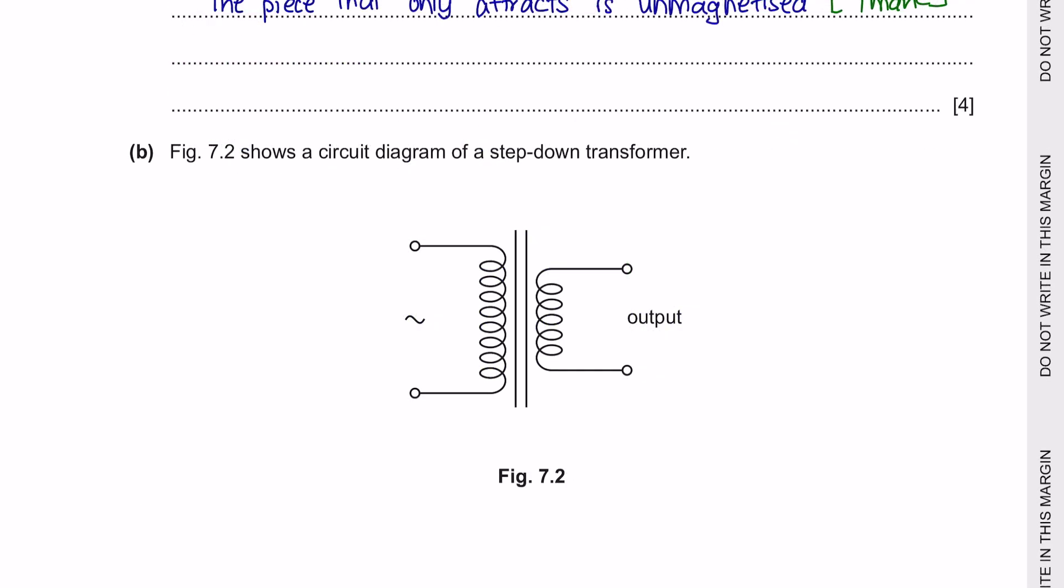Next question B. Figure 7.2 shows a circuit diagram of a step-down transformer. Now the role of a transformer is to change the size of the alternating voltage. For instance, the voltage in is at the primary coil and the voltage out is at the secondary coil. If you have more number of turns in your primary coil and smaller number of turns in your secondary coil, it is called a step-down transformer whereby you are reducing the size of the output voltage.